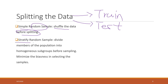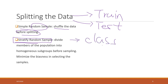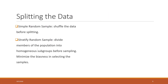Or we can use stratified random sampling. This is a great way to split data for classification, while random splitting is normally used for regression models. Stratified random splitting means that we divide the members of the population into heterogeneous subgroups before splitting, so we can minimize the biases when we select the samples.